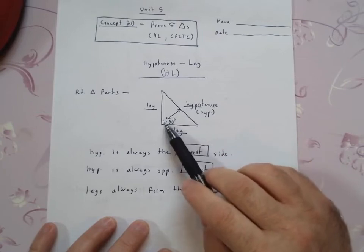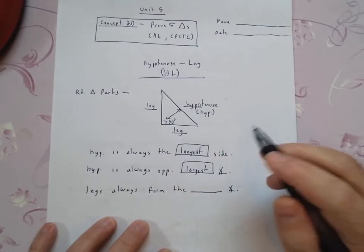So it is always across from it. And we're going to talk about being across from angles and things like that. So the hypotenuse and the largest angle, they have a relationship, they're always across from each other. Largest angle, largest side, they're across from each other.